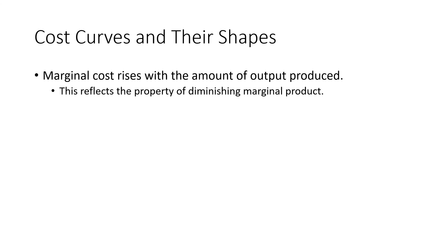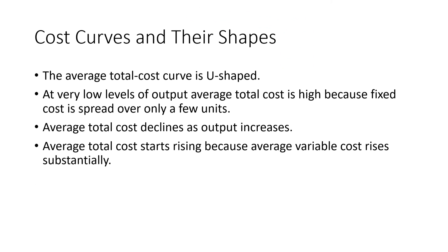Marginal cost rises with the amount of output produced because of the diminishing marginal product of the factors being used. The average total cost curve is U-shaped: it declines initially because of the decline in average fixed cost, and then rises because of an increase in average variable cost.